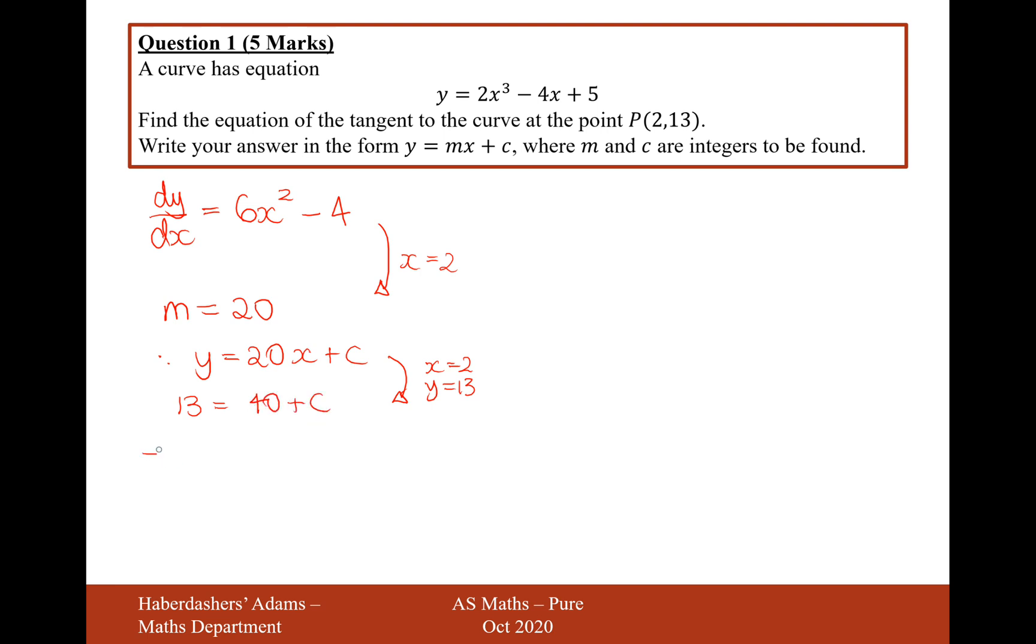Take away the 40 on the other side, and you get minus 27 equals c. So therefore, the final answer for this question here is y equals 20x minus 27.